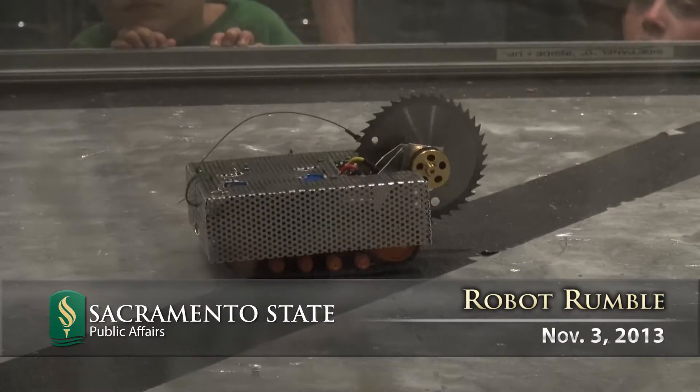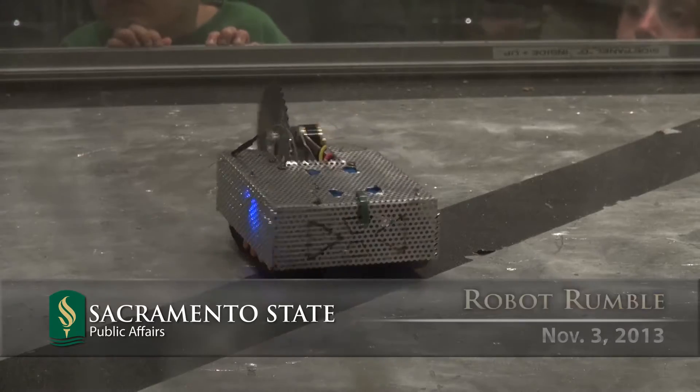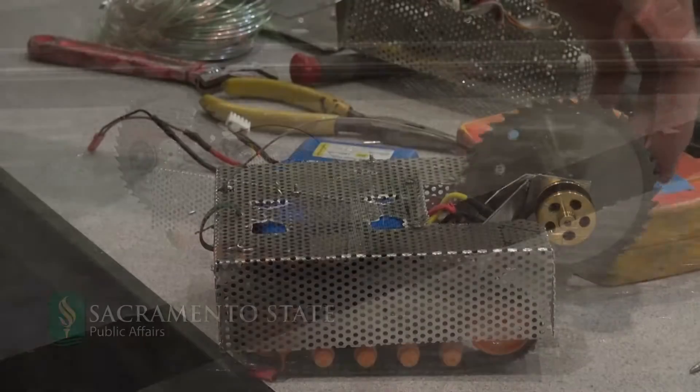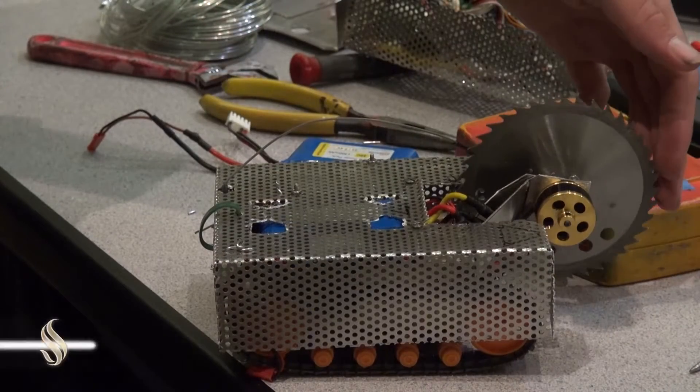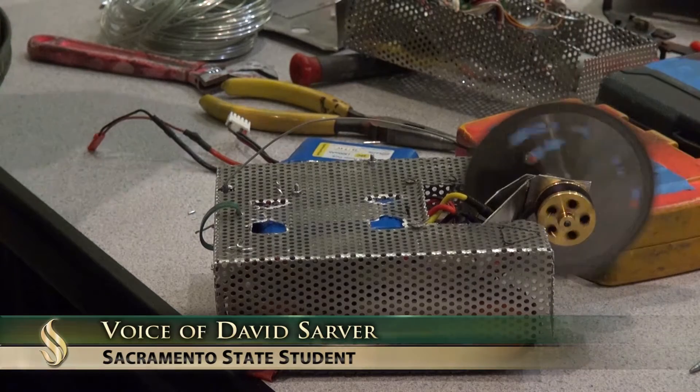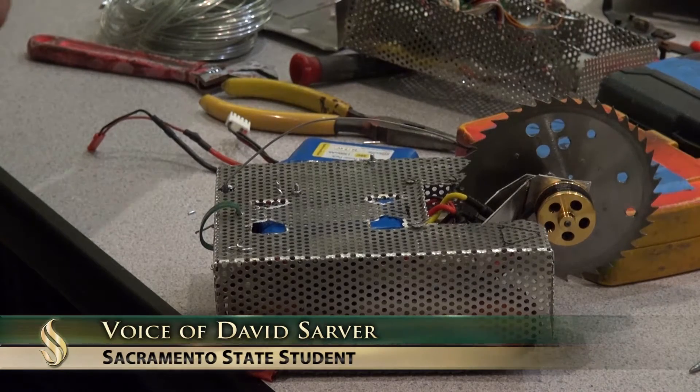We have a vertical rotary saw on it. It's actually spinning in the opposite direction than the conventional direction which is down. It's spinning up so that if it catches something it'll flip it over as well as cutting it.